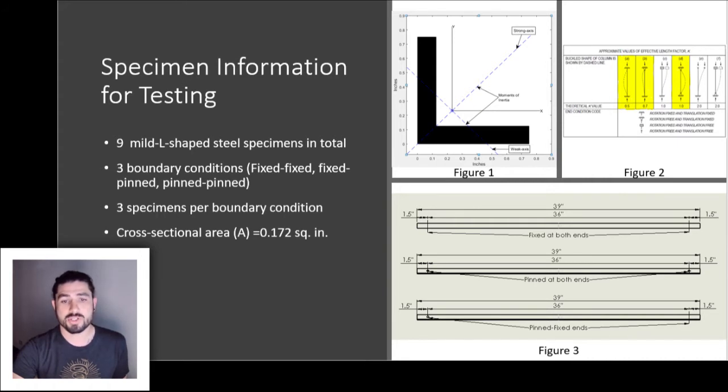Figure two shows the boundary constraints, highlighted in yellow, used for this experiment. Three of the nine specimens were tested with both ends fixed, another three specimens were tested with both ends pinned, and the last three specimens were tested with one end pinned and the other end fixed.